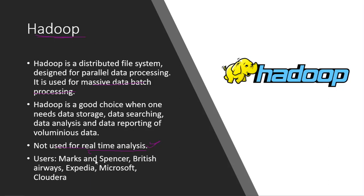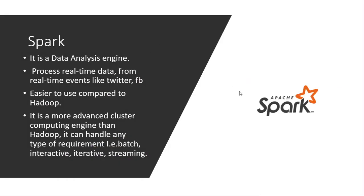Companies like Microsoft, Cloudera, British Airways, and Marks & Spencer are using Hadoop to deal with data searching, storage, analysis, and reporting over large volumes of data. Hadoop helps with batch processing and is not for real-time analysis — that is the key difference between Hadoop and the other softwares.